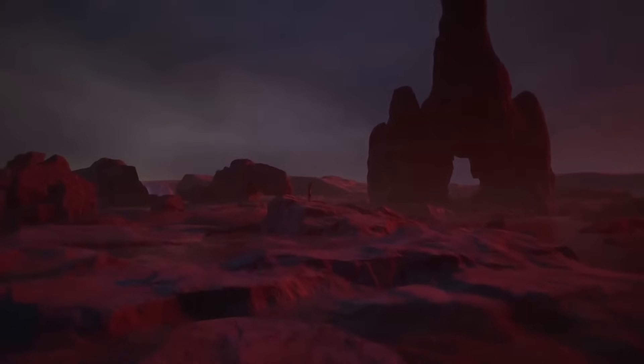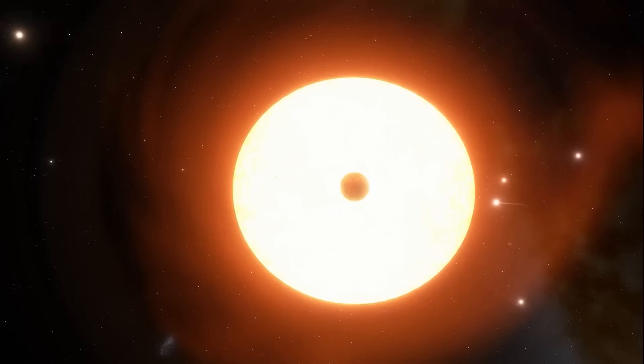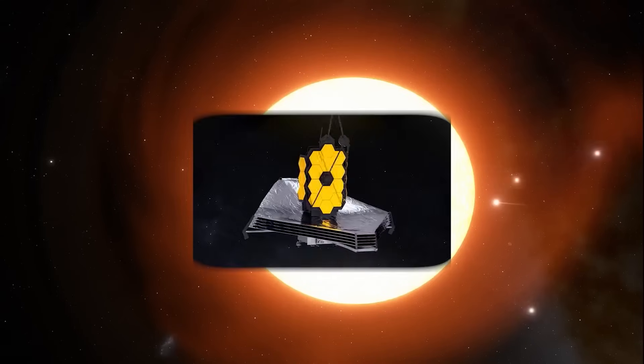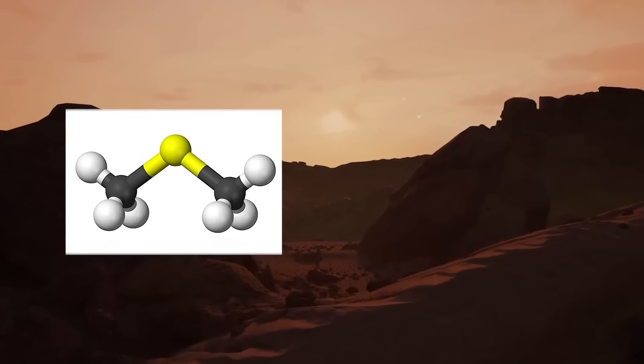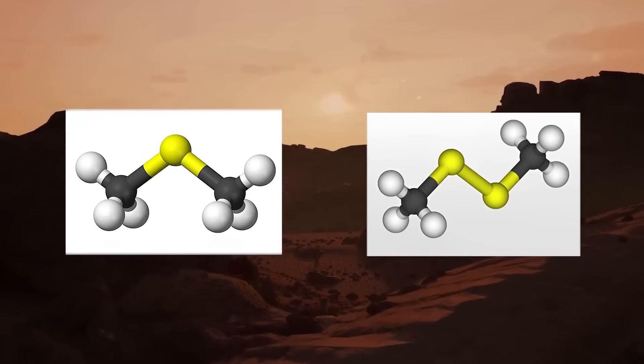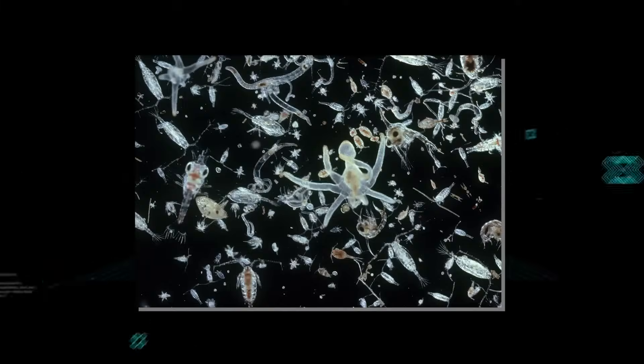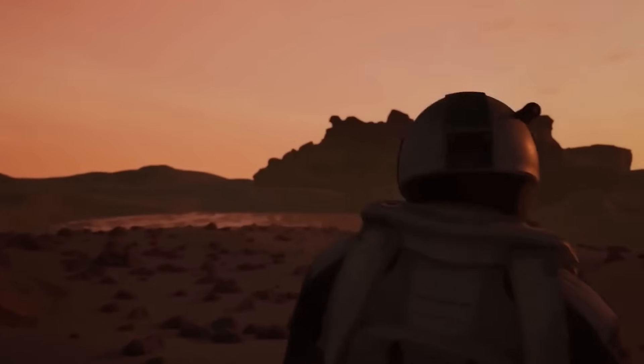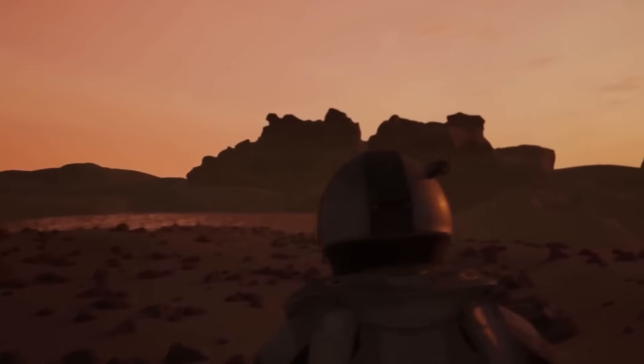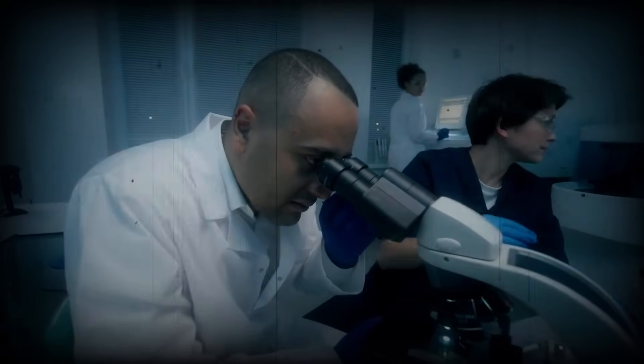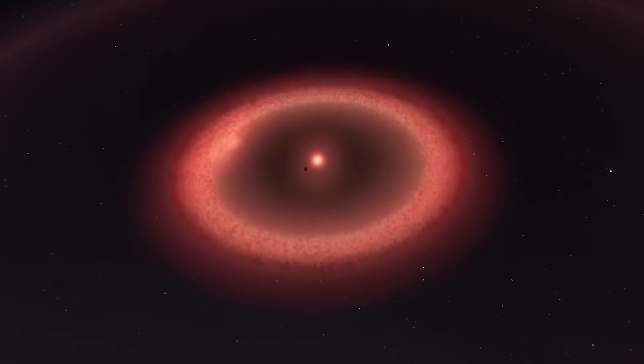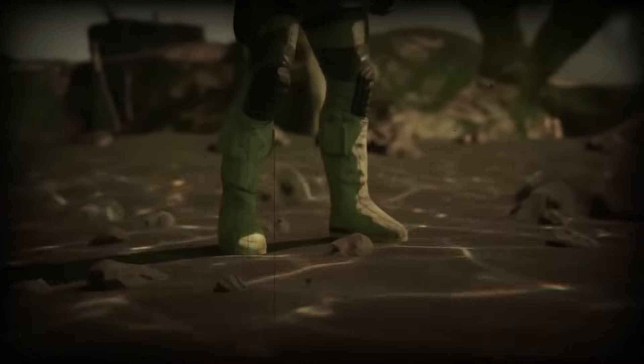But here's where things get shocking. Recent data from the James Webb Space Telescope revealed traces of dimethyl sulfide and dimethyl disulfide in its atmosphere. On Earth, these chemicals are mostly produced by marine plankton, tiny ocean organisms. Finding them on another planet is a massive deal. If these compounds were created by biological activity, K2-18b might be the first world outside our solar system where signs of life have been detected.